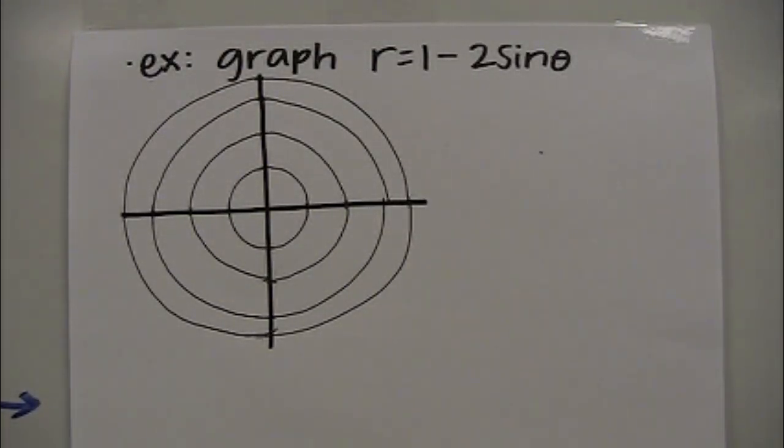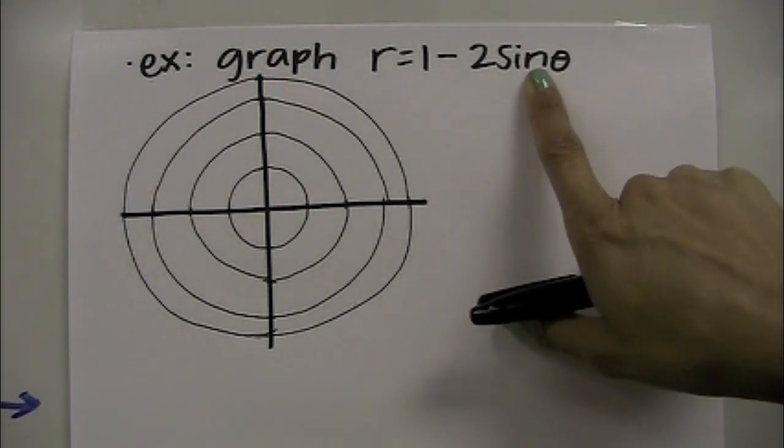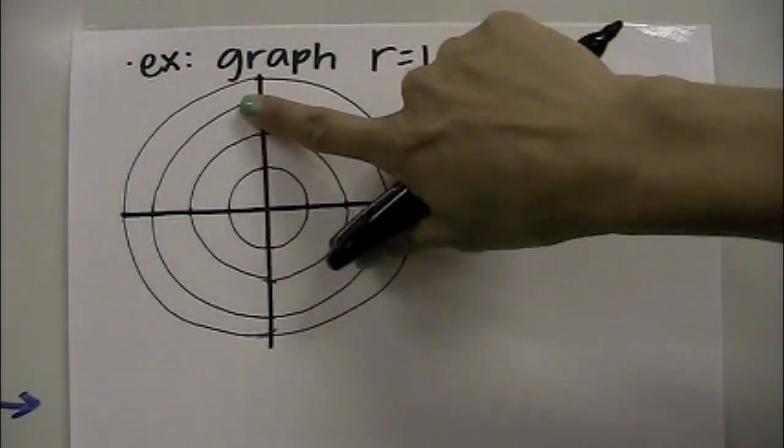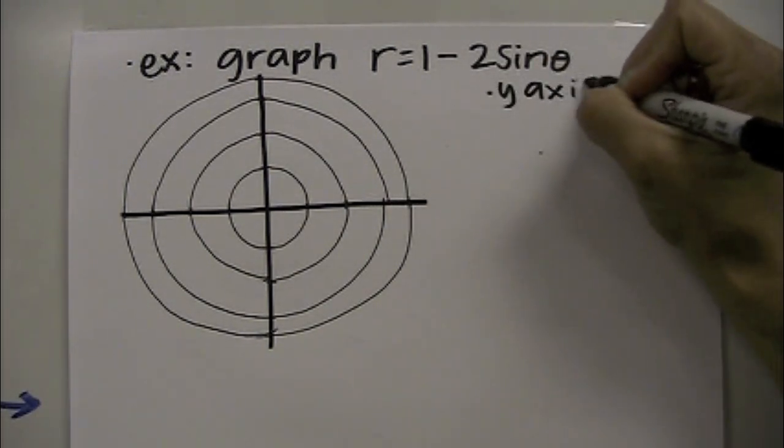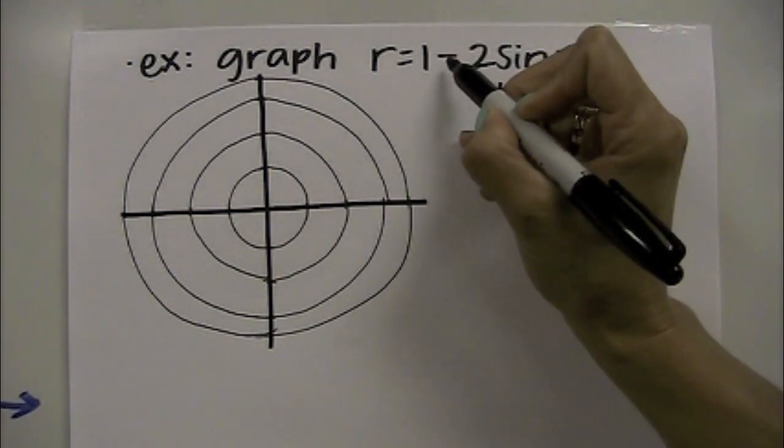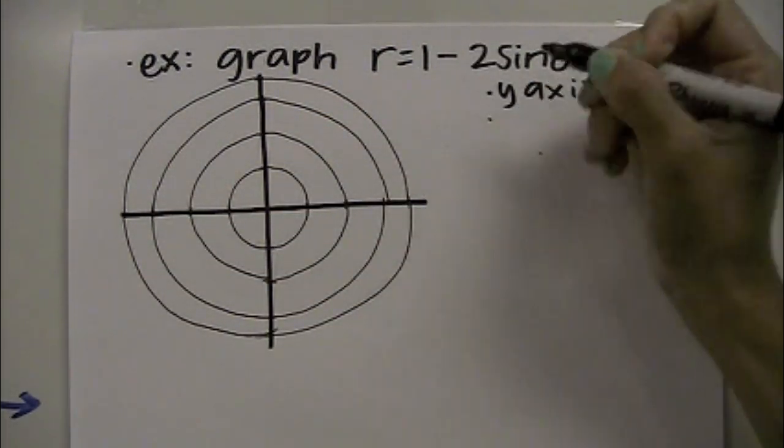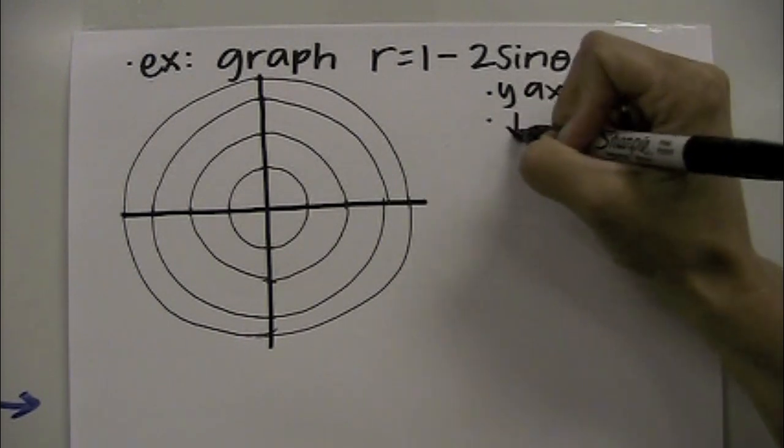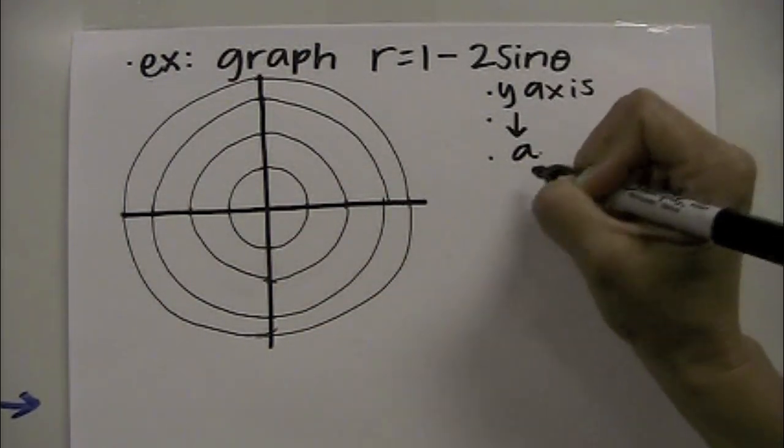So we're going to look at the graph of r equals 1 minus 2 sine of theta. Without doing any work, I know because it's a sine graph, it's going to be along the y-axis. Because this is a minus, I know the graph will fall below the x-axis.